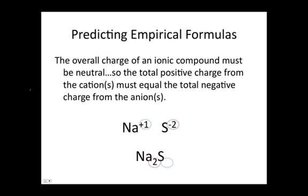The overall charge of the compound must be neutral, so the total positive charge from the cation must equal the total negative charge from the anion. So if the charges on the ions are known, or you can predict the charges by looking at the periodic table, you can predict the empirical formula of an ionic compound formed from those ions.